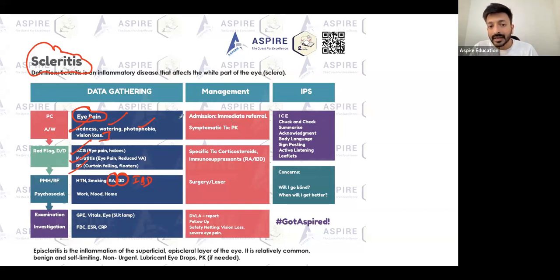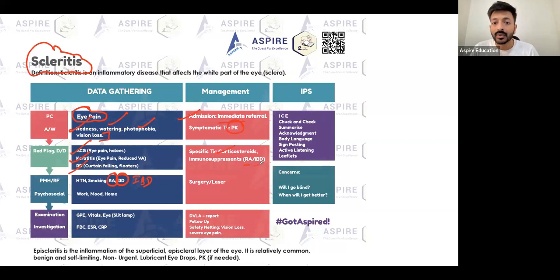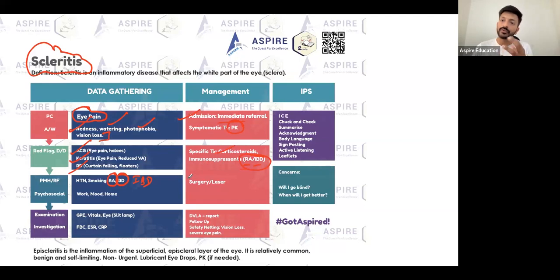For scleritis management, you need to admit the patient and make an immediate referral. It's a severe pain, so give painkillers. Treatment is corticosteroids. Make sure the underlying RA or IBD is being treated properly, and refer to the specialist. Review medication as needed. Surgery or laser can be done, but since it's an inflammatory disease, corticosteroids are very helpful.